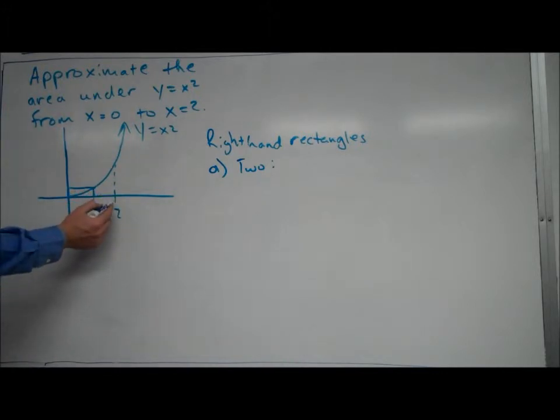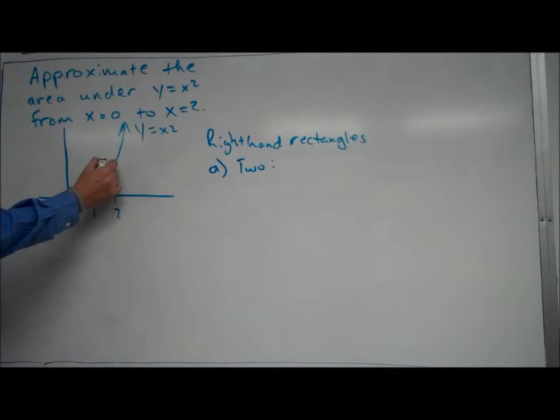From one to two, the height of the rectangle is determined by the y-value at the right-hand point again, which in this case is two. So here's that right-hand point. I'm going to go ahead and draw that rectangle, which doesn't look too great, but that's okay.